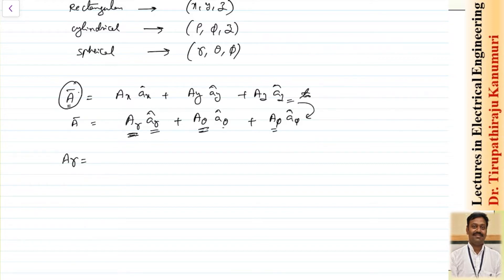To calculate the value of each component, it is nothing but the scalar projection of vector A in the direction of R. Similarly, A_theta is the scalar projection of A in the direction of theta, and the same applies for phi. We have already seen how scalar projection can be done using the dot product.